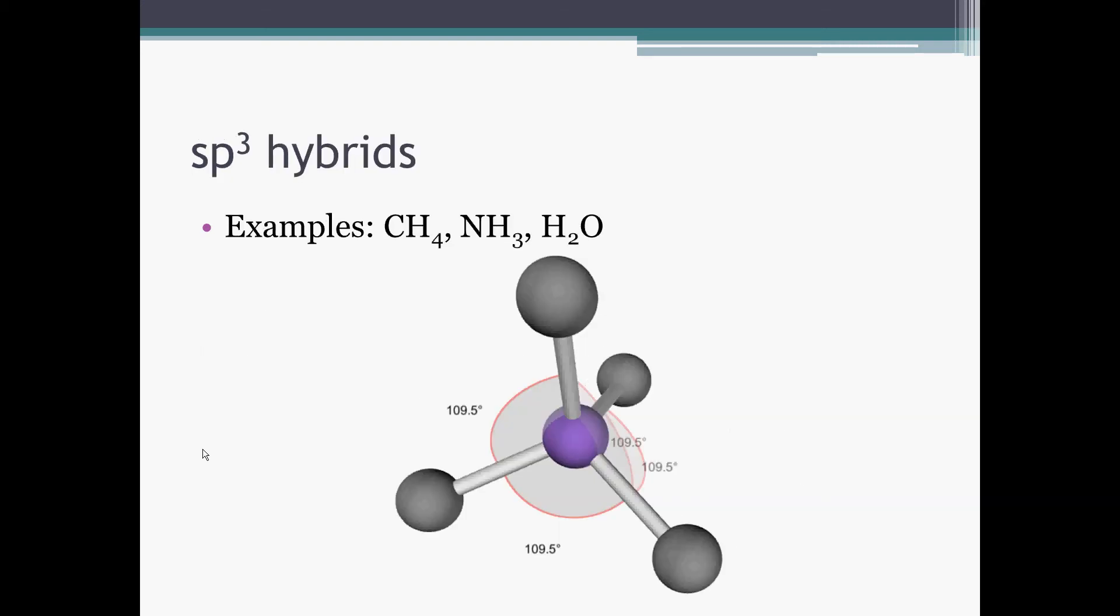If we go to another electron domain, so we have four domains, this involves a hybridization between an S and three P orbitals, so we call it SP3. And three very classic molecules that have this domain pattern are methane, ammonia, and water. The difference is in the number of non-bonding pairs.